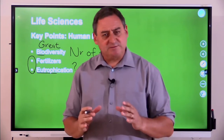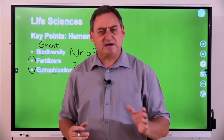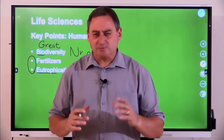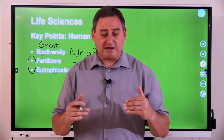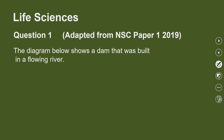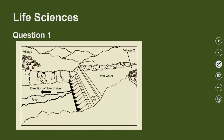When we prepare ourselves for assessment activities — whether a project, test, or exam — it's very good to look at past papers. The first question is all about the effect of building a dam in a river. A diagram shows a dam built in a flowing river. The dam wall is damming the water up, changing the ecosystem. We've built houses, a small village, and a farming community nearby, so we're going to have an impact with our pollution into the water.